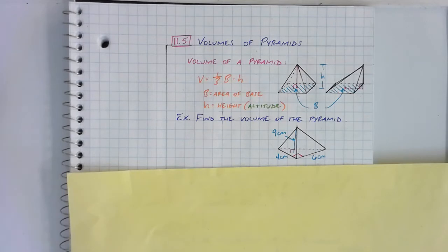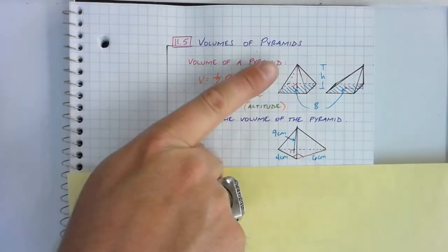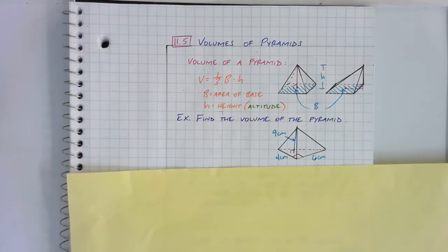A pyramid on the flip side has a single base, and then it has triangles on each of those sides that will meet at some point above that base. So these were the two families of the polyhedrons that we talked about.